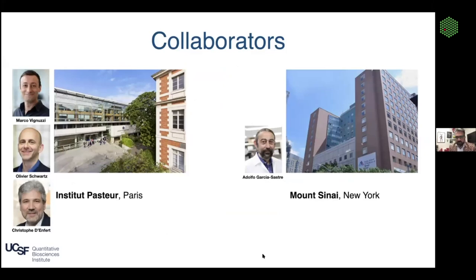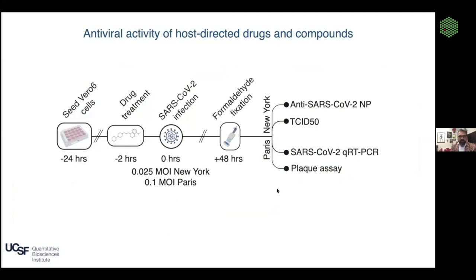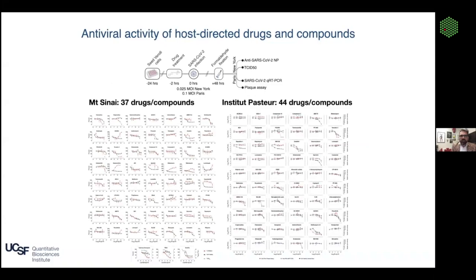We wanted to test these drugs and compounds but we didn't have the virus propagating at the time, so we reached out to collaborators at the Pasteur Institute — Marco Vignuzzi, Olivier Schwartz, and Christophe Donfer — and to Adolfo Garcia-Sastra at Mount Sinai. They had two slightly different but complementary assays. Having two collaborators on two continents meant that if we got the same results, we'd have greater confidence in the physiological relevance of the data.